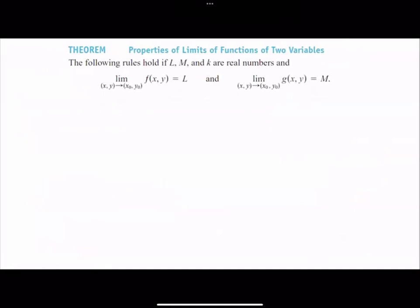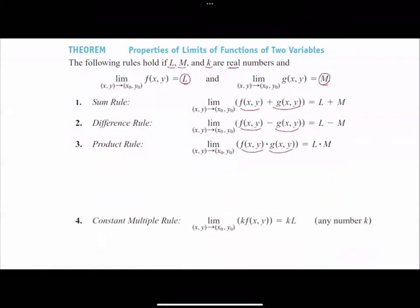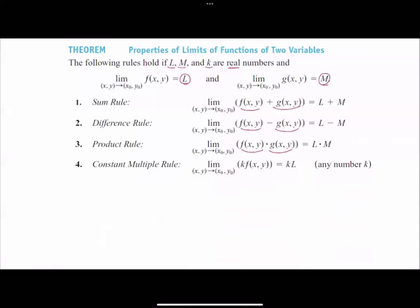Properties of the limit of functions of two variables: the following holds if l, m, and k are all real numbers. Suppose the limit of f is equal to l and the limit of g is equal to m. First, if you add these two functions, you can add their limits. If you subtract them, you can subtract their limits. For the product rule, if two functions have limits, you can take their limits and multiply them together. For the constant multiple rule, if k is a constant multiplied by f, you can write k in front of the limit.